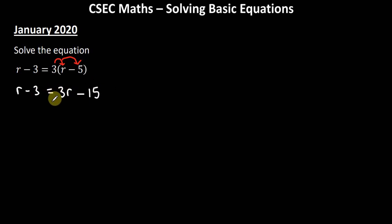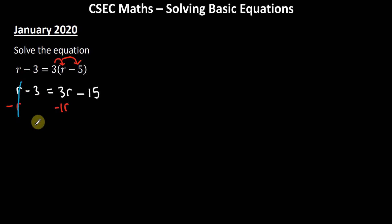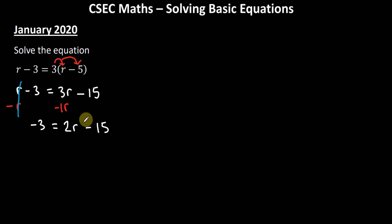There are a couple of ways to proceed. What I'll do is subtract r from both sides — subtracting r is the same as subtracting 1r — so r minus r is 0. We're left with minus 3 on the left, equal to 3r minus 1r, which is 2r, minus 15. This groups the r terms together. Next, to get rid of minus 15, we add 15 to both sides.